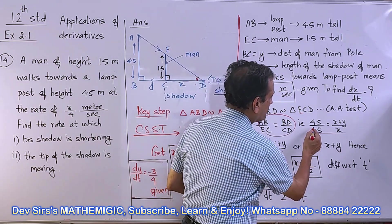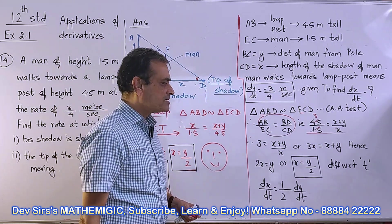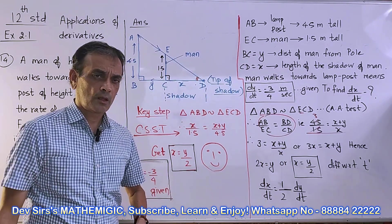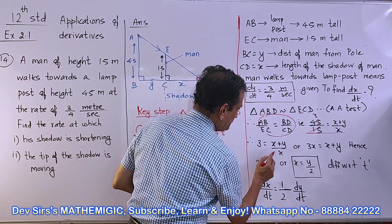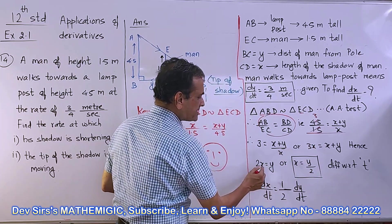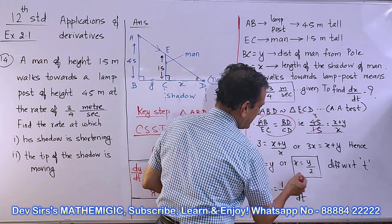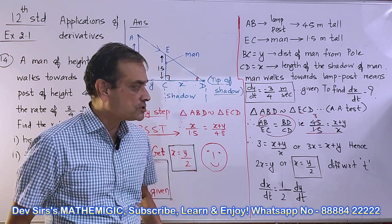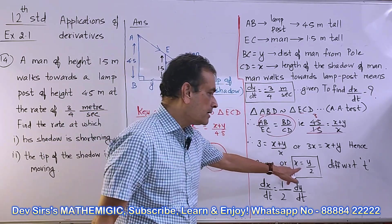4.5/1.5 is 3, so 3 = (X+Y)/X. Therefore 3X = X+Y, which gives 2X = Y, or X = Y/2. This is our main equation. In order to get that equation, we had to show the two triangles similar.